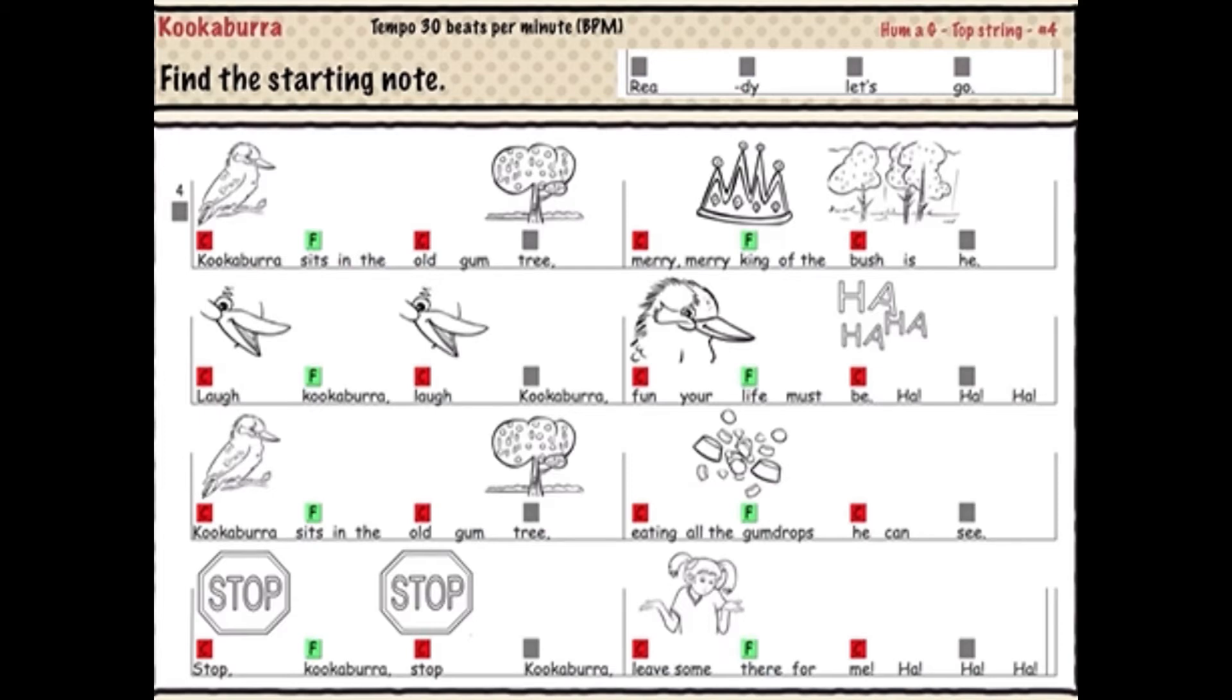Kookaburra sits in the old gum tree. Eating all the gumdrops he can see.